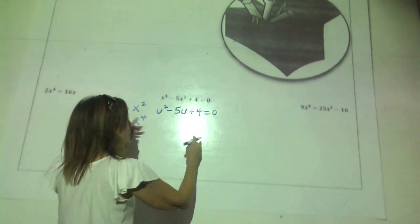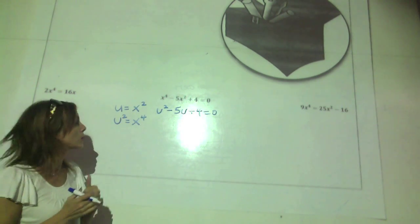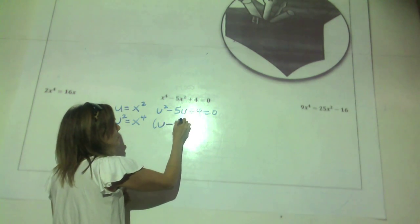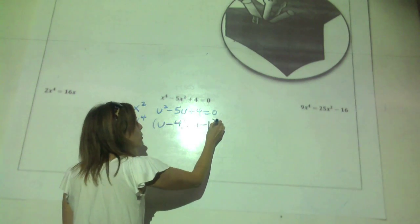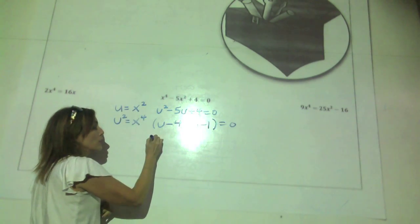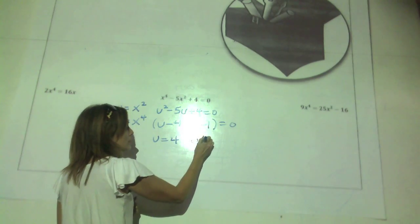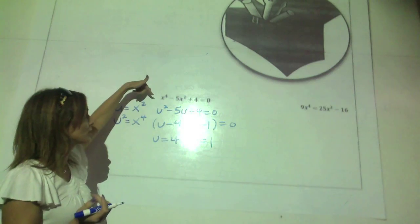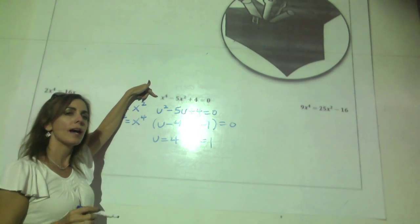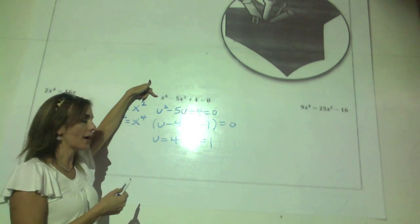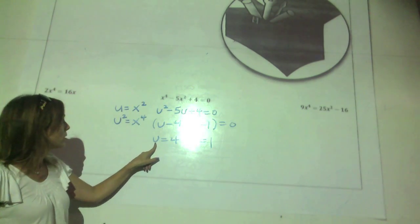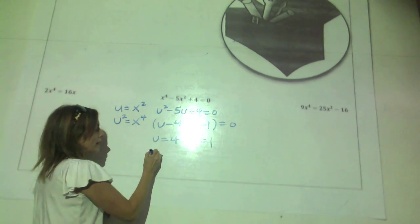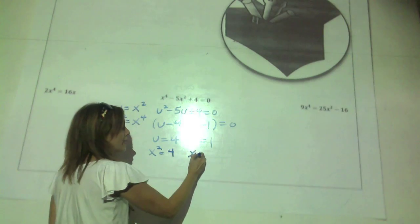Now we set each factor equal to zero. For 2x, x equals zero — easy. For x minus 2, x equals 2 — easy. For the trinomial x squared plus 2x plus 4, it doesn't factor any further, which means we need to use the quadratic formula: x equals negative b plus or minus the square root of b squared minus 4 times a times c, all over 2 times a.